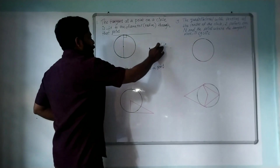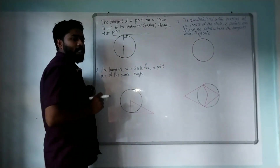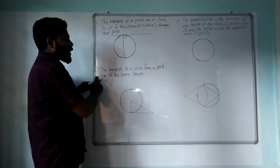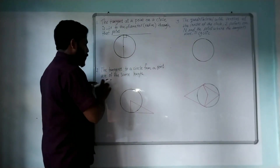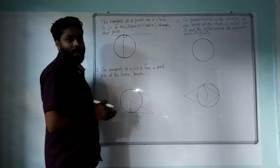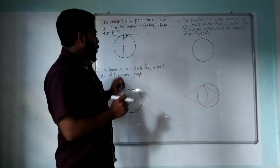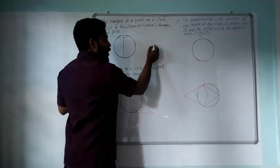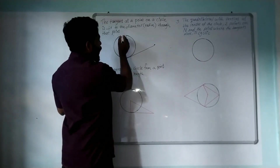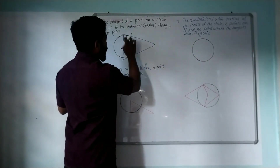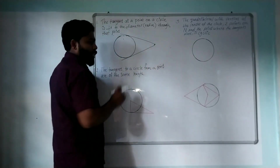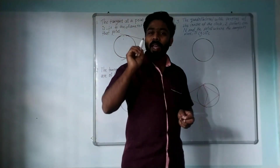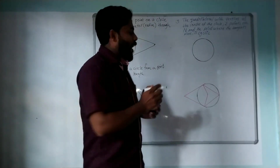Tangents to a circle from a point are of the same length. If we have one point outside the circle and we have two tangents from that point to the circle, the length of both tangents is equal.